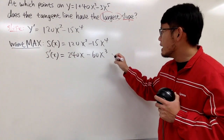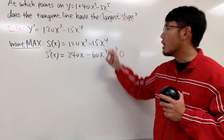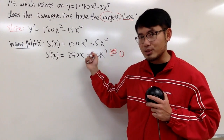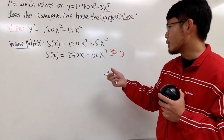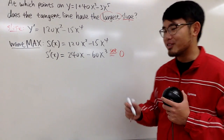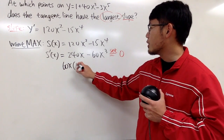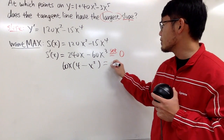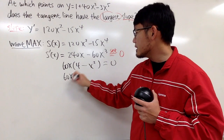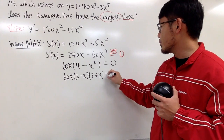We are going to set S'(x) = 0 to find the critical numbers of the slope function. To solve this, I recommend factoring. Factor out 60x first, giving 60x(4 - x²) = 0. Then factor further: 60x(2 - x)(2 + x) = 0.